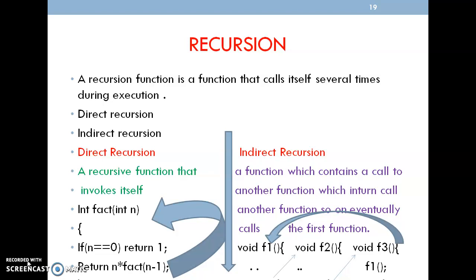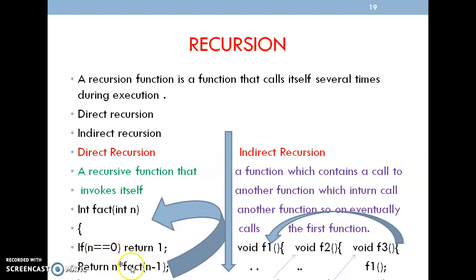The first is direct recursion and the second is indirect recursion. In direct recursion, the function invokes itself. As shown in the example, inside one function, I am calling the same function, which calls repeatedly until all the values of that iteration are complete.